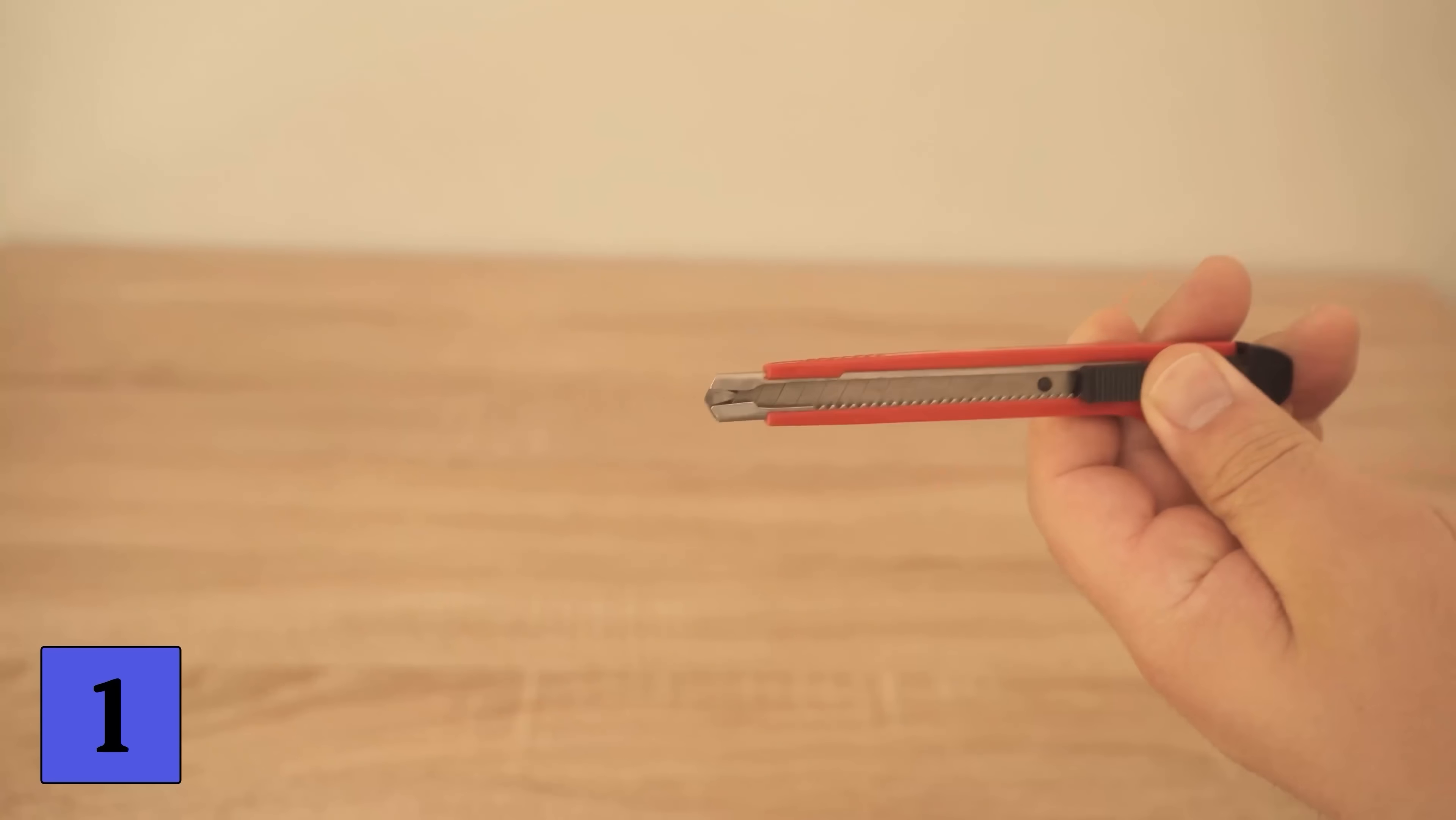For example, what do you do if you have a cutter knife and the blade is no longer sharp? Then you simply break off the tip here. After all, that's what cutter knives are designed for. But how exactly do you do it?